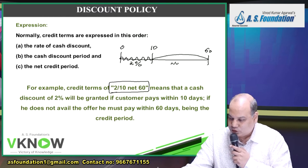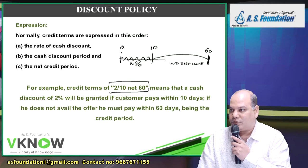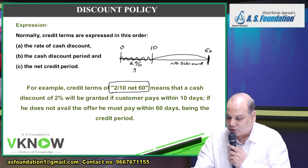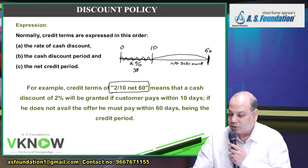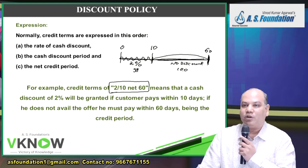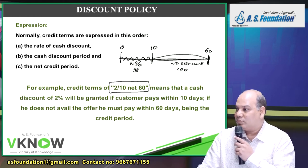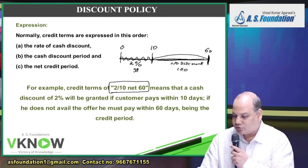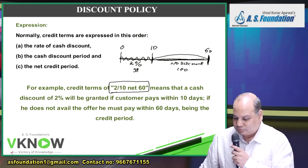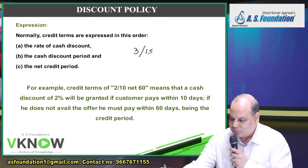If you pay after the 10th day, no discount. However, you must ensure that you pay the amount within 60 days in any case. So '2/10 Net 60' means a cash discount of 2% is granted if the customer pays within 10 days; if the offer is not availed, the customer must pay within 60 days — the normal credit period.